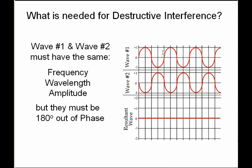Looking at our sine wave pattern, zero degrees is at the start, 180 degrees is halfway through, and it completes the whole pattern in 360 degrees. In the middle is 90 degrees and down at the trough would be 270 degrees.